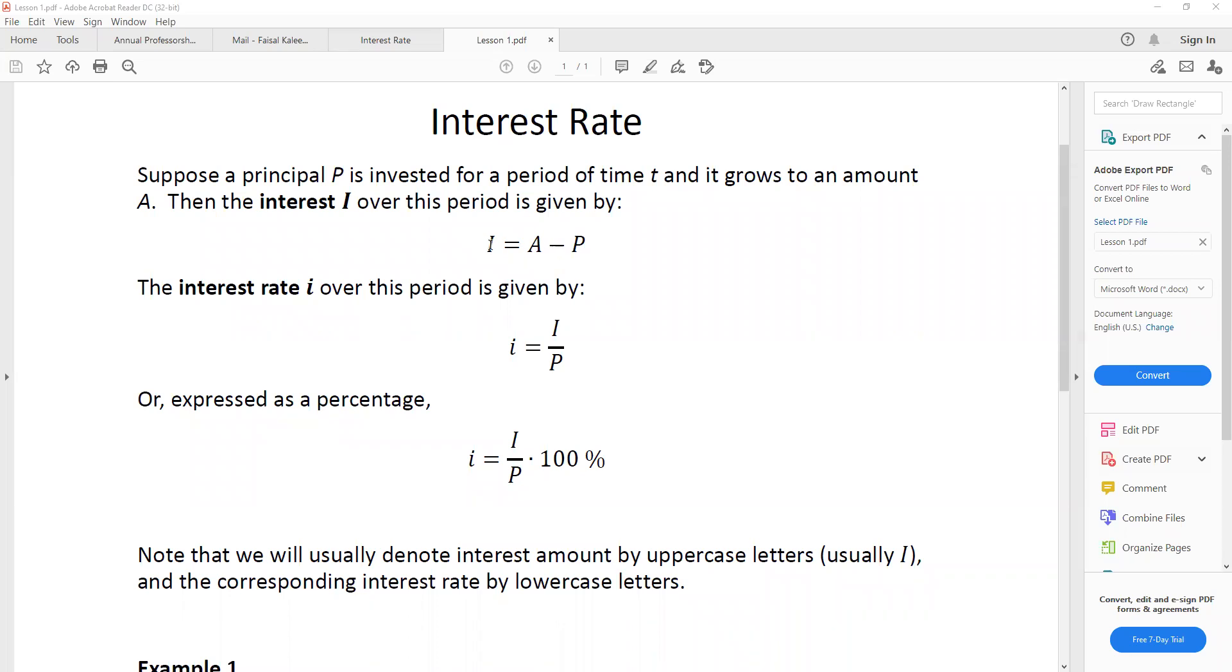And note that it's a common convention that capital I is used for the interest amount, and the little i will be used for the interest rate. So the interest rate little i over this period is given as the amount of interest divided by the original principal. So little i is equal to big I divided by P. And if we want to express it as a percentage, then we would multiply the quotient by 100 and then it would be in percentage.